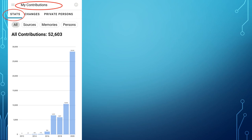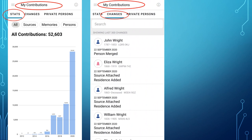My Contributions, which is now also on FamilySearch.org, was a feature first introduced on the Family Tree mobile app and then incorporated into the computer version. The stats show your contributions to FamilySearch — you can view them by all contributions or by the number of sources, memories, or persons you have added. My Contributions also shows changes you have made; like Recents, this is an easy way to return to family members you are working with. But unlike Recents, which lists the last 50 people, changes list the last 300 — FamilySearch.org on the computer seems to have more than 300, although I haven't counted.